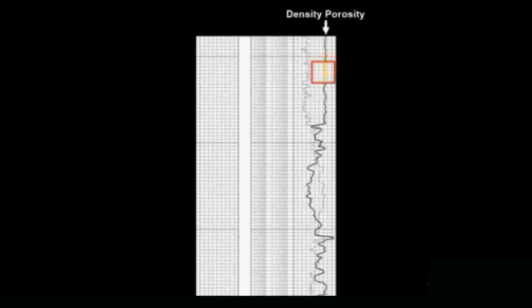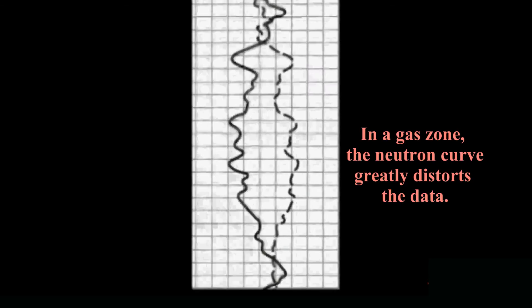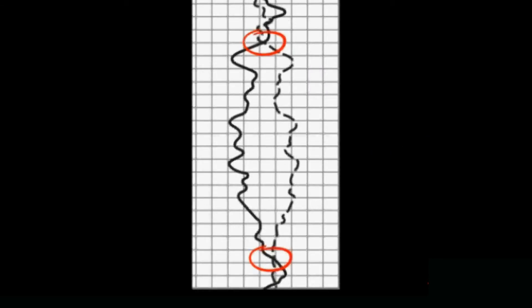Here you can see that the density curve and neutron curve will generally track each other in measuring porosity. But in a gas zone, the neutron curve greatly distorts the data. An indication of error when comparing the two logs gives a good indication that this is a gas zone.